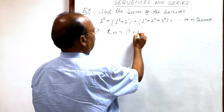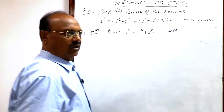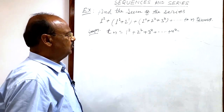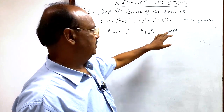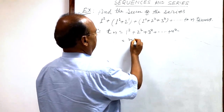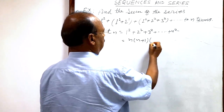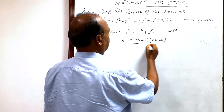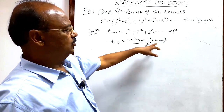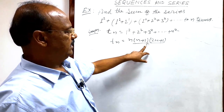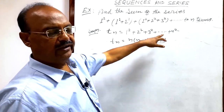So tn will be 1² + 2² + 3² up to n², and we have already discussed a formula that the sum of squares of the first n natural numbers is n(n+1)(2n+1) divided by 6. So tn = n(n+1)(2n+1)/6. This is the formula for the sum of squares of the first n natural numbers.